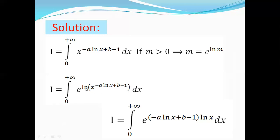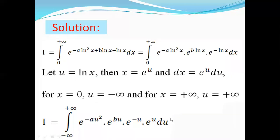Here we will put the power down next to ln. So I becomes the integral from 0 to plus infinity of e to the power minus a·ln(x) + b, minus 1, all multiplied by ln(x) dx. We then multiply ln(x) with the bracket, so I becomes the integral from 0 to plus infinity of e to the power minus a·ln²(x) + b·ln(x) minus ln(x), dx.